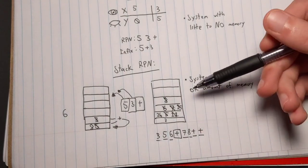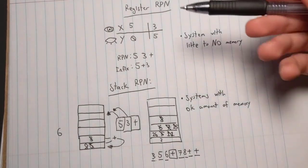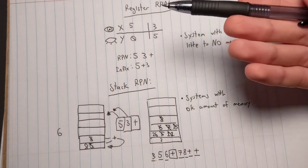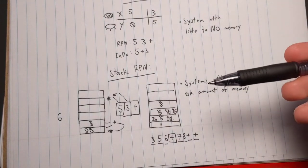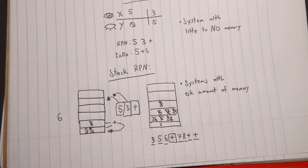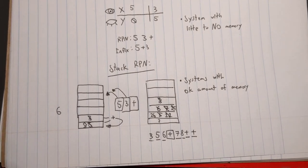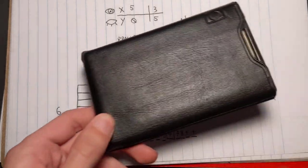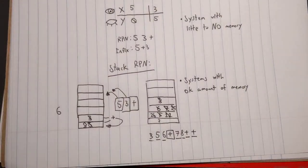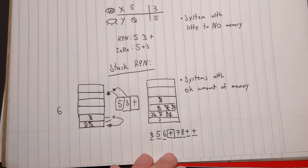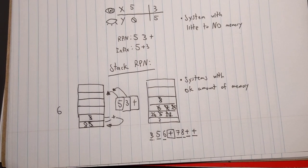Stack RPN can be a bit more confusing than Register RPN because Register RPN only ever has two numbers at a time, whereas a stack can have many, many numbers at once — and keeping track of that can be very difficult. But Stack RPN is usually what's used in most other applications besides very memory-limited calculators. I'll go ahead and show you an example on my computer.